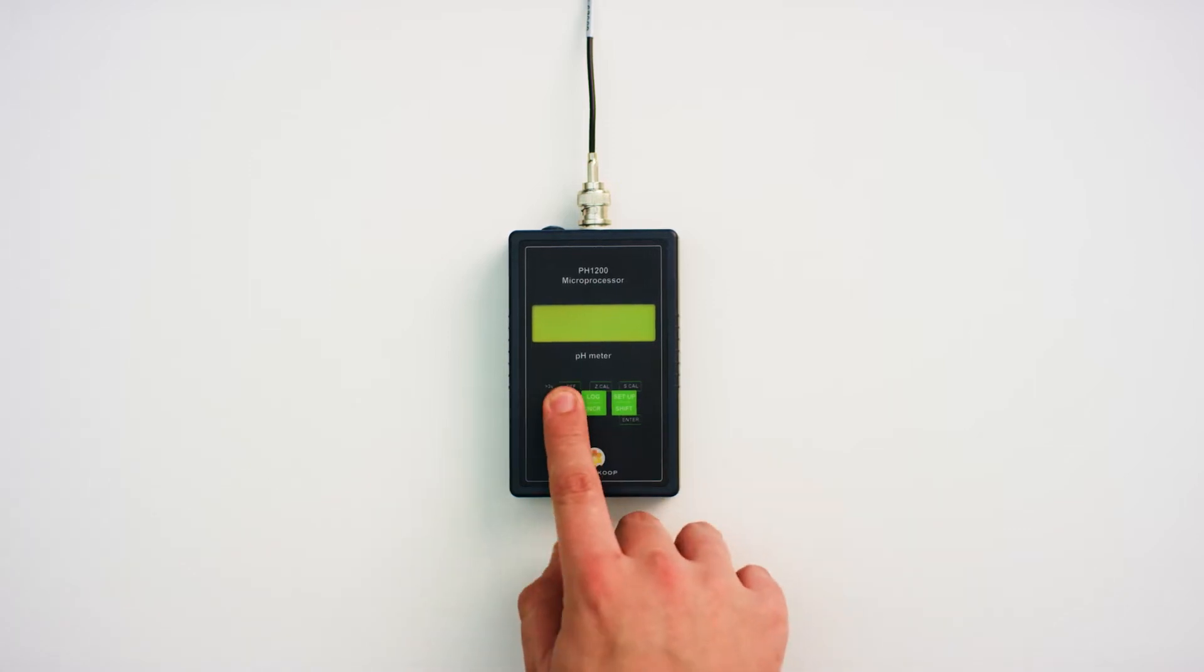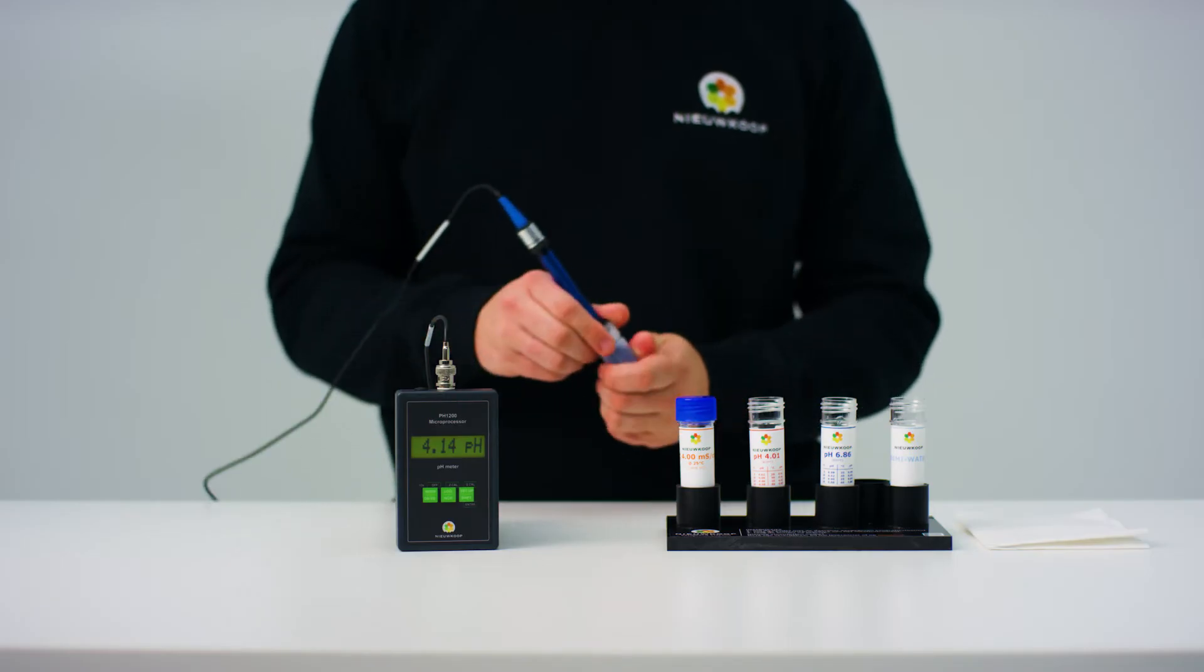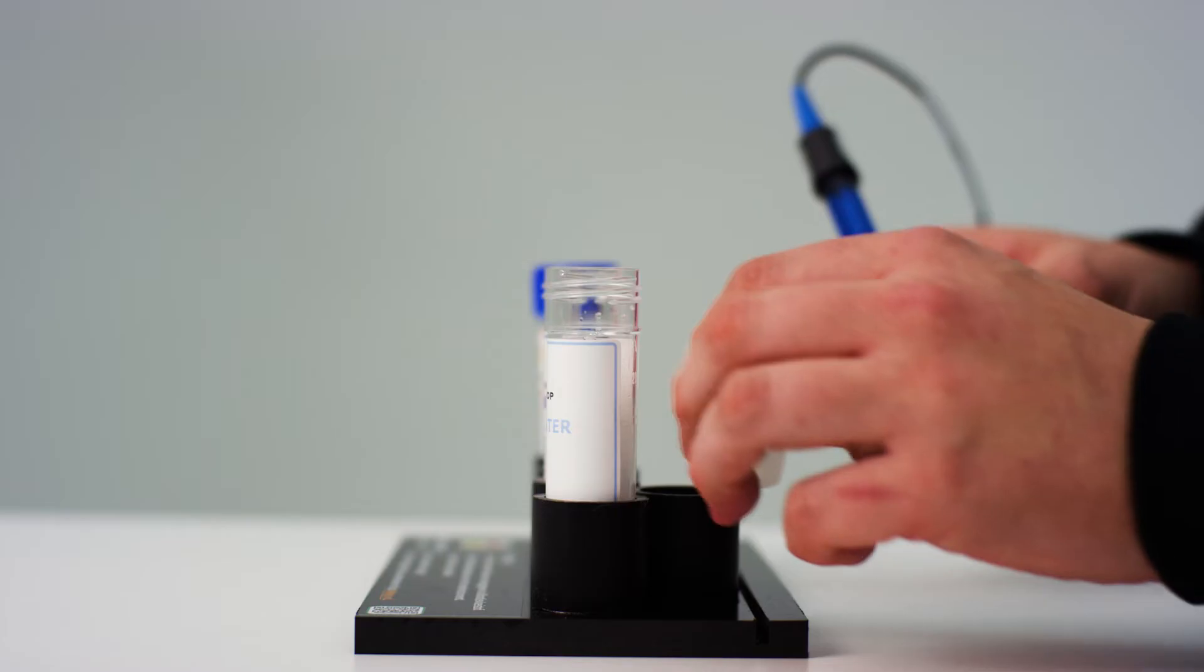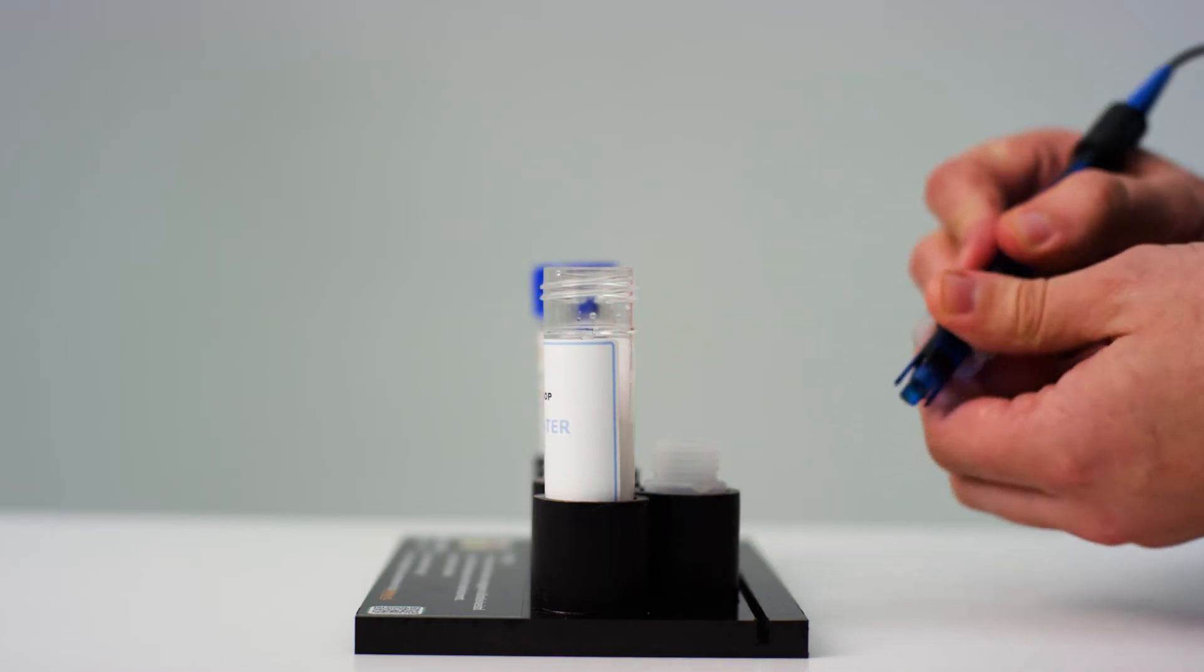Press the left button to turn on the pH meter. You start by removing the protective cap and placing it in the holder on the calibration station.